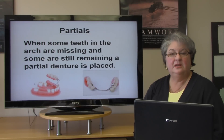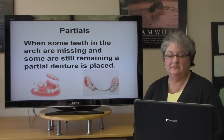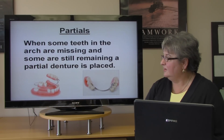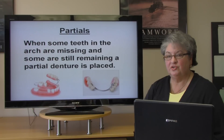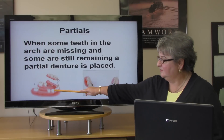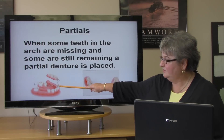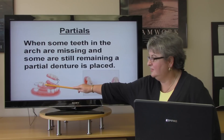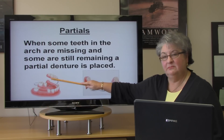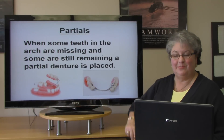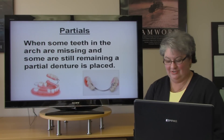When there are only some teeth missing in the arch, the doctor will place what is called a partial denture. So we have some natural teeth in this patient's arch, and then we have some missing teeth — this is called a partial denture.